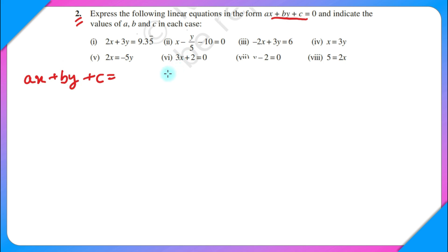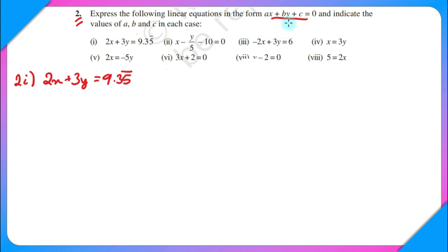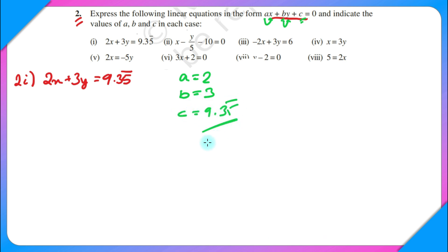Let's start with the first part, which has fractions and decimals. In this part we have 2x + 3y = 9.35̄. The question asks us to find the values of a, b, c. A common mistake students make is to directly write a = 2, b = 3, and c = 9.35̄, but that is actually the wrong answer because the form is incorrect — 9.35̄ has to be on the left-hand side, but here it is on the right-hand side, so the value of c would be wrong.